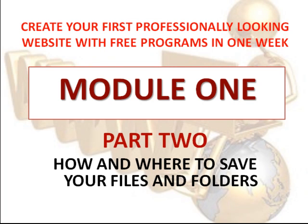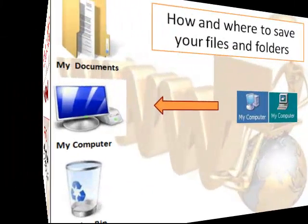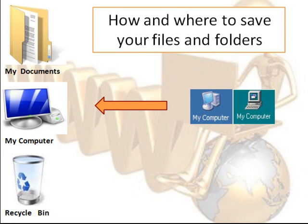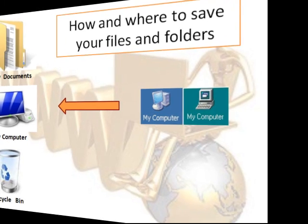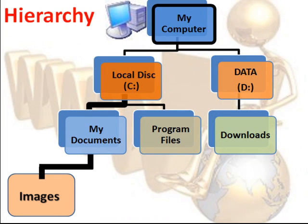Hello and welcome to Part 2: how and where to save your files and folders. This represents our desktop, and here we are interested in one particular icon — My Computer. It is very important that you know the hierarchy of your computer, because you need to know where you saved or downloaded files from the internet. Usually you have a local disk C, and it really depends on your computer configuration whether you have data D or data F. We are interested in two folders: My Documents and the Images folder.